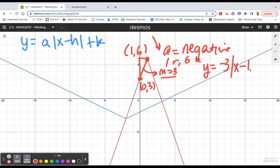x minus 1 for the 1 unit that I moved to the right, plus 6 for the 6 units that I moved up.